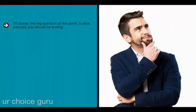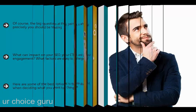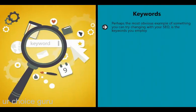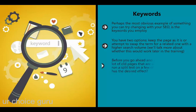The big question is what precisely you should be testing. Here are some of the best options. Keywords: perhaps the most obvious thing you can try changing is the keywords you employ. Let's say you have pages ranking well for a particular search term, but that term doesn't get much search volume. You have two options: keep the page as it is, or attempt to swap the term for a related one with higher search volume. Before you go ahead and potentially jeopardize old pages that are working for you, why not run a split test on a few and see if it has the desired effect?